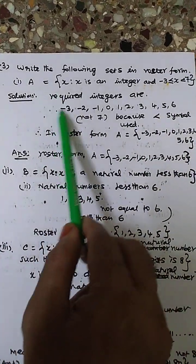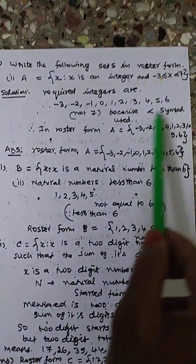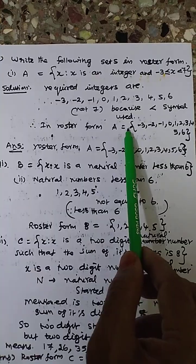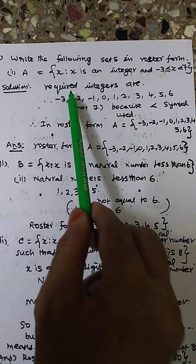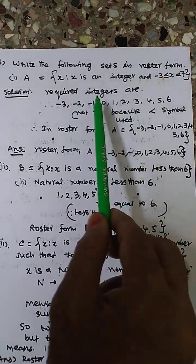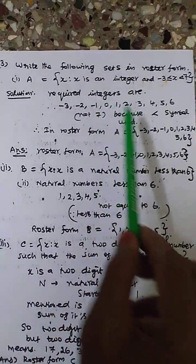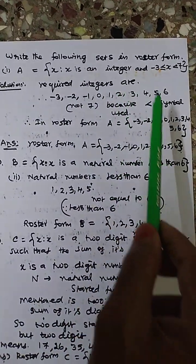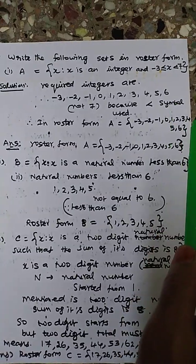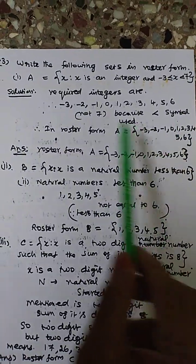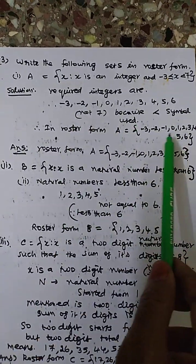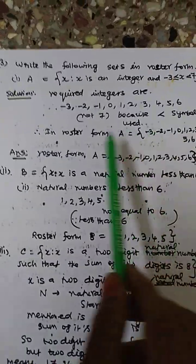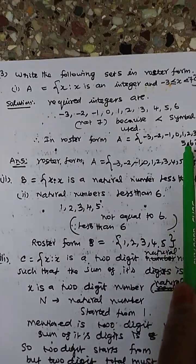In roster form, we write the set as: A = {−3, −2, −1, 0, 1, 2, 3, 4, 5, 6}. Like this, we write in set form. This is the roster form.